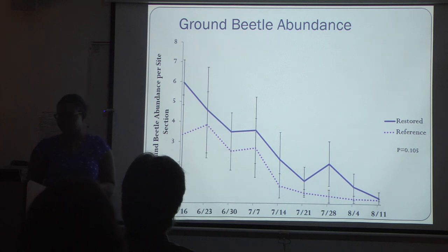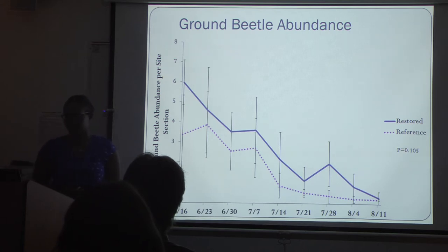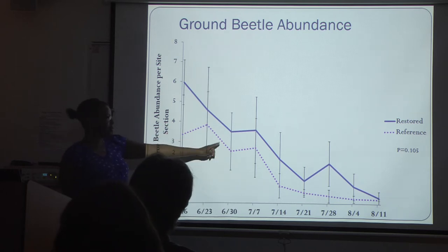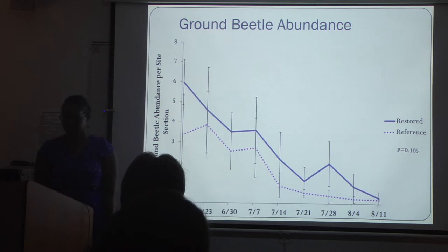The abundance does, however, trend higher throughout the season in the restoration sites. The restoration site never had abundances that were lower than the reference site. The trend in relative ground beetle abundance from mid-June to August also followed a similar pattern, with dips and peaks all in the same areas.